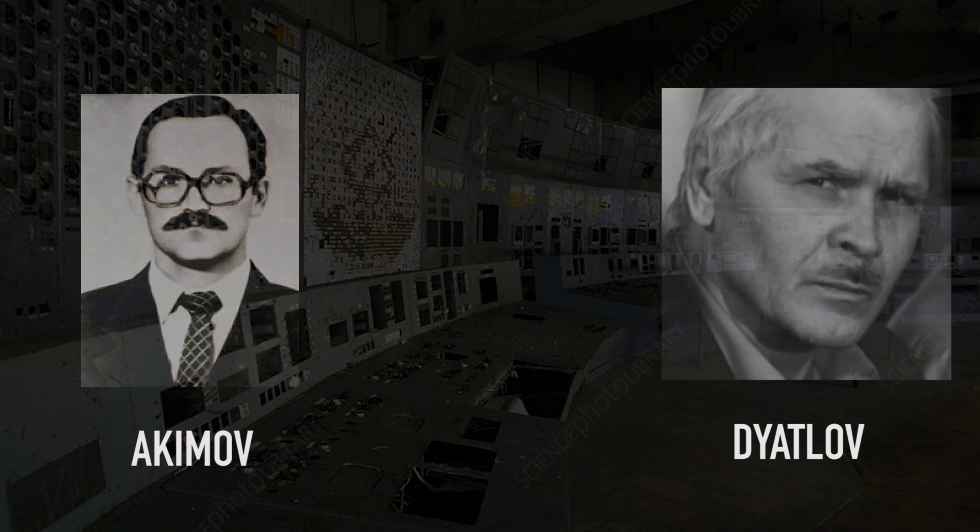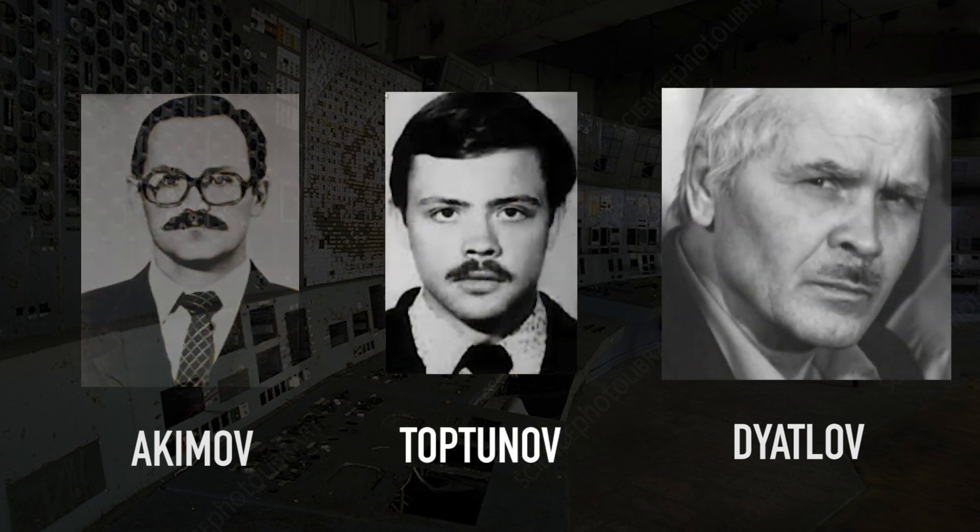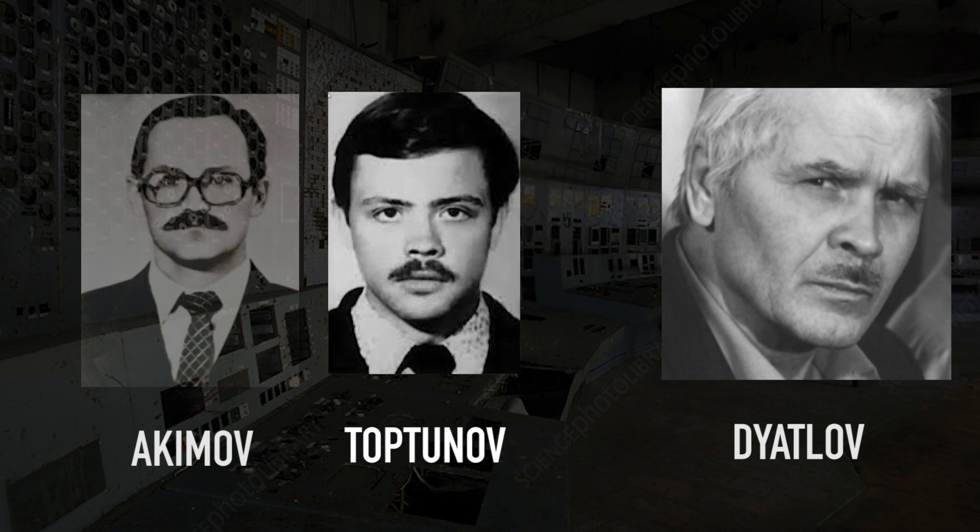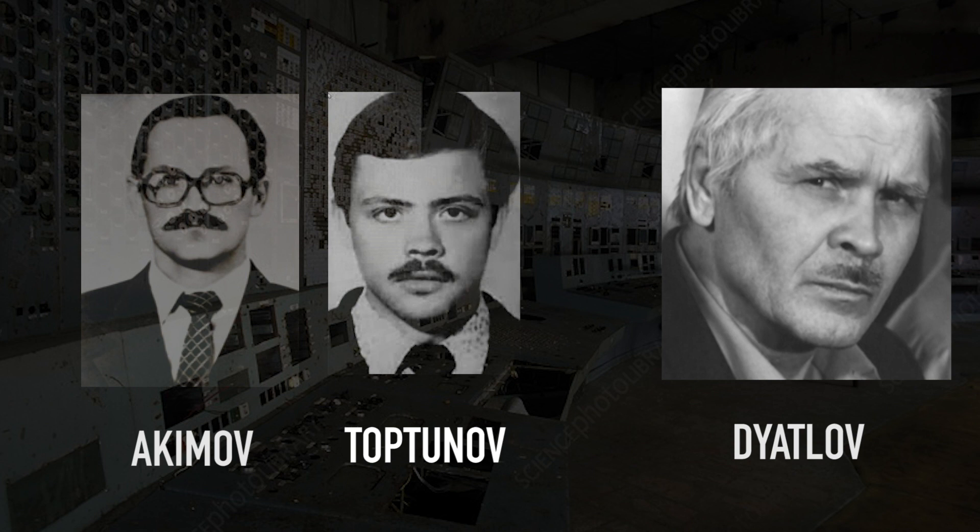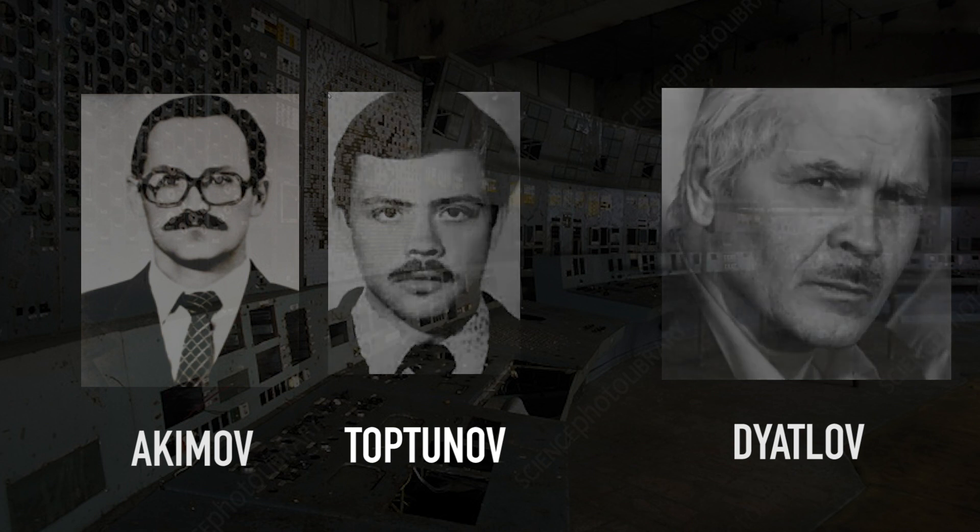Akimov relays the issue to deputy chief engineer Anatoly Dyatlov. What happened next is still a subject of debate today. According to some accounts, Akimov and his colleague Toptenov tried to convince Dyatlov to abort the test, but are overridden. According to others, there never was any conflict, and the team was simply performing as usual. Whatever the case, we do know that they attempted to restart the reactor.